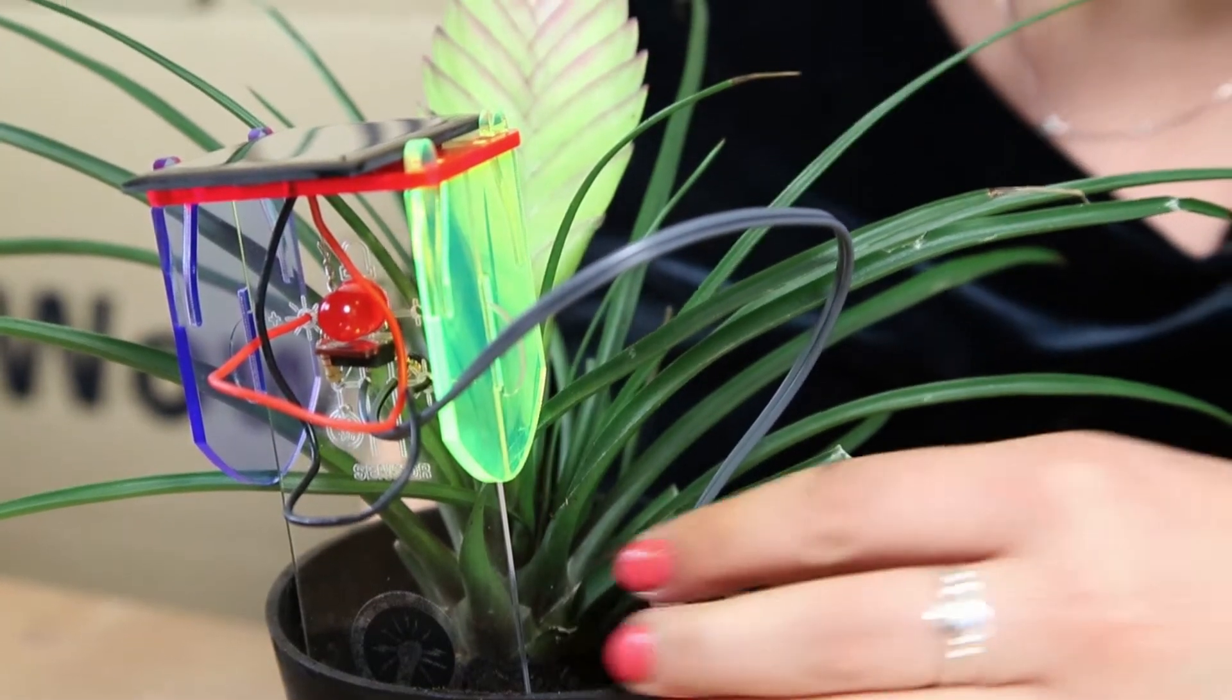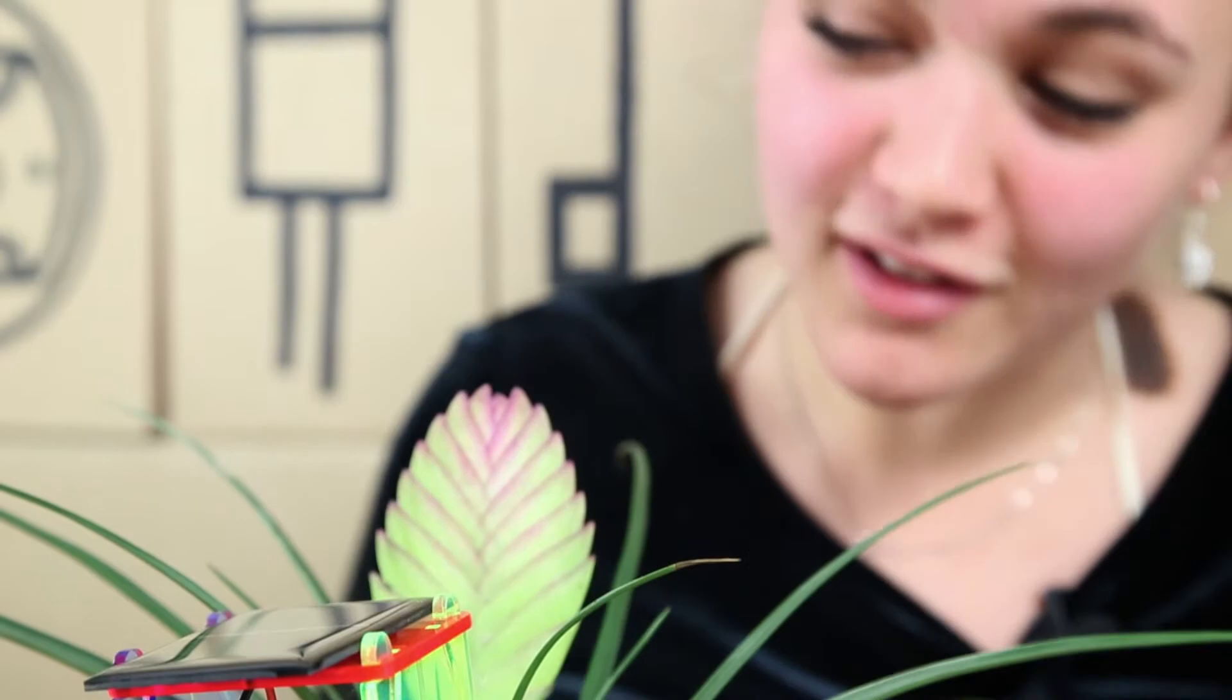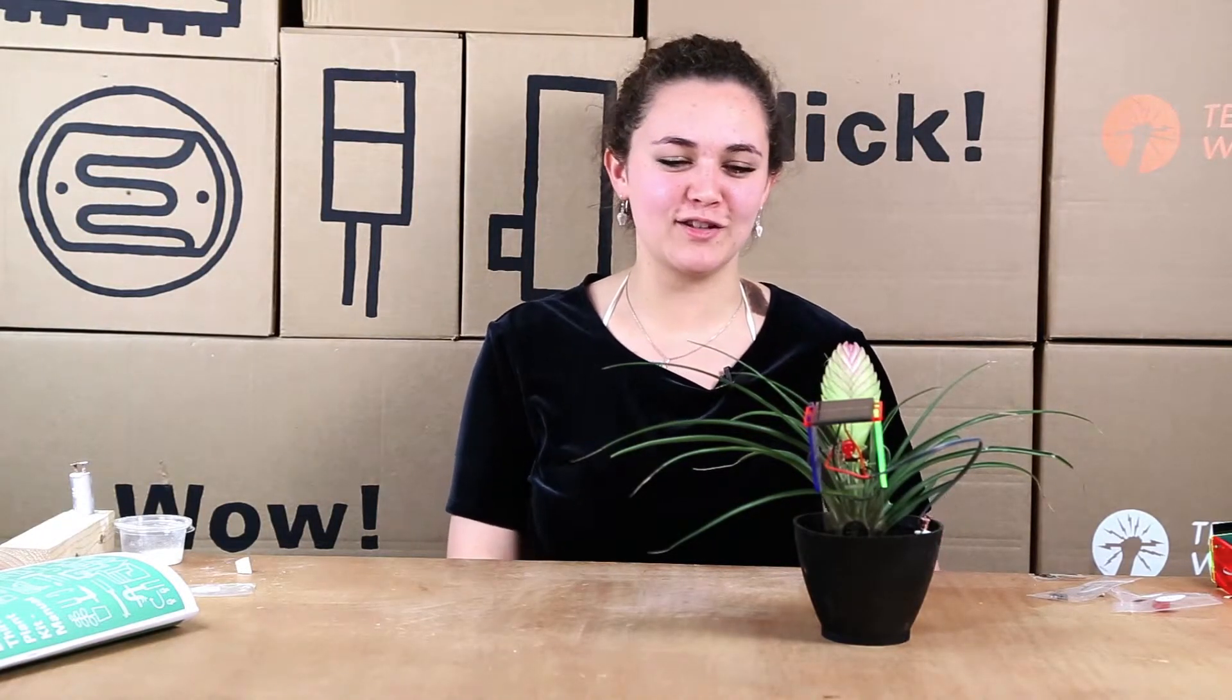And yeah, there you go. So it's flashing, which means my plant needs watering. So thanks for watching. I hope this tutorial helped you put together your own thirsty plant so you can use it in any of your favorite plants at home. Leave any comments below if you want to get in contact with us, and happy making!